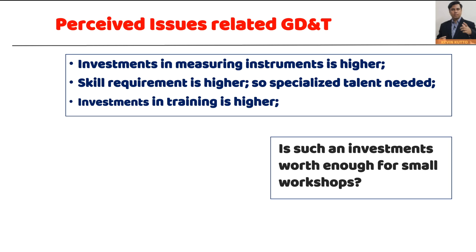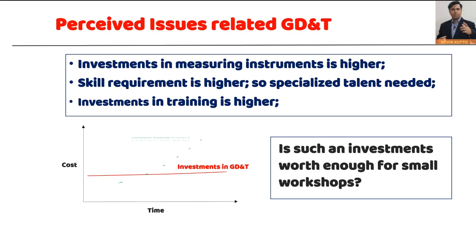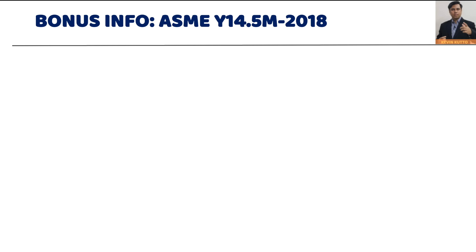The answer can be found through a business case analysis. With cost on the vertical axis and time on the horizontal axis, we know the investments required over time — but GD&T will also save costs and increase profitability, so investments will be recovered. You have to run the business case considering your future plans and then decide whether to adopt the system. Two factors are really important: return on investment and your customer needs.